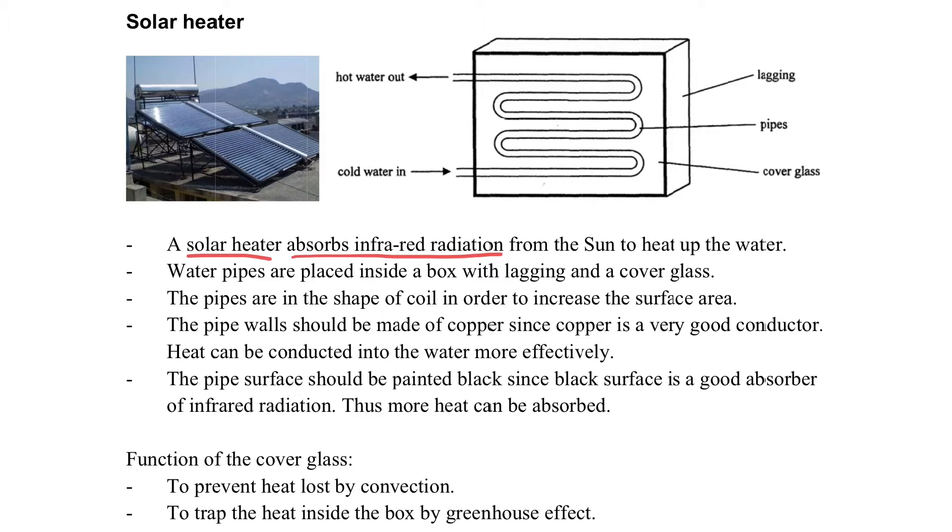The solar heater is designed to absorb the infrared radiation from the Sun. You can see that it's a simple design with water pipe inside, covered in a box with glass.